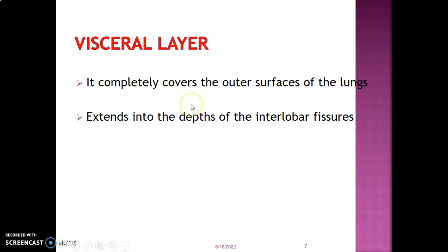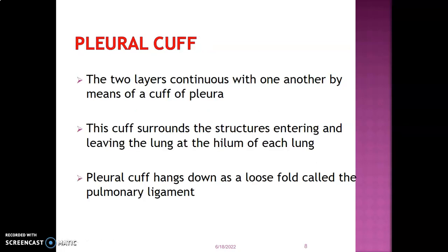The visceral layer of the pleura covers the outer surfaces of the lungs and usually extends into the depth of the interlobar fissures of the lung. The two layers of the pleura — visceral and parietal — are continuous with one another and form a cuff of pleura.